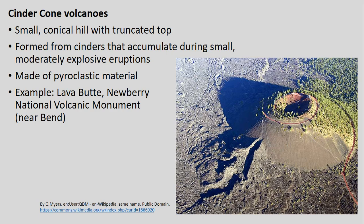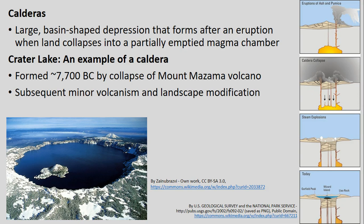Some different types of examples: we have cinder cone volcanoes — smaller, conical hills, often one of the more classic ideas of what a volcano looks like. These are formed by cinders accumulating during relatively smaller or moderately explosive eruptions. We have examples of this across Oregon — if you go to central Oregon, you've got Lava Butte, as shown by this image here, as part of Newberry National Volcanic Monument near Bend, where you can actually drive up to the top.